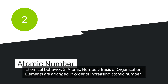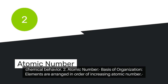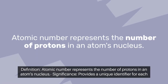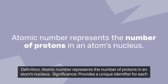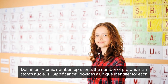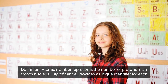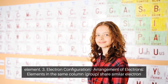Atomic Number. Basis of Organization: Elements are arranged in order of increasing atomic number. Definition: Atomic number represents the number of protons in an atom's nucleus. Significance: It provides a unique identifier for each element.